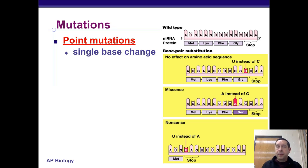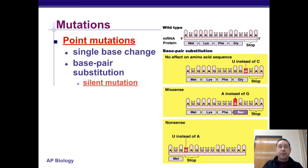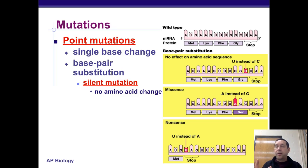Or you can see there's an A replacing a G. Sometimes a point mutation can have no effect, sometimes it can have an effect but basically works okay, and in some cases the protein either doesn't form at all or doesn't work at all. They're caused by base pair substitutions. A silent mutation is one that has no effect, because of that wobble effect where that third base oftentimes can change but not change the amino acid that's put in the protein.